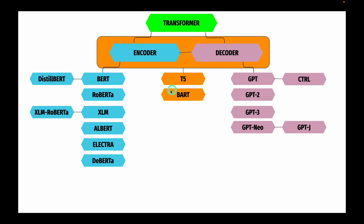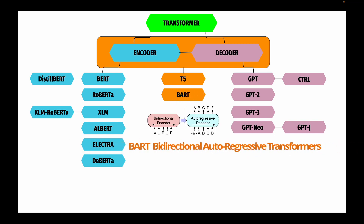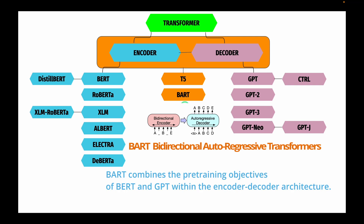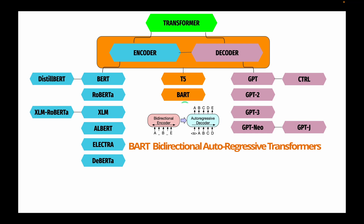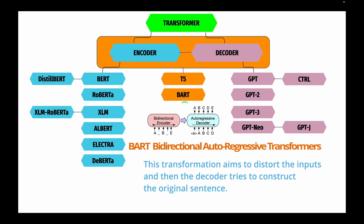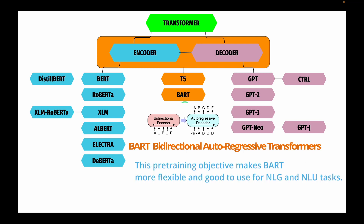The next encoder-decoder architecture is BART, which stands for Bidirectional Autoregressive Transformers. BART combines the pre-training objectives of BERT and GPT with the encoder-decoder architecture. The input sentence undergoes one of the following transformations: simple masking, sentence permutation, token deletion, or document rotation. This distorts the inputs and the decoder tries to reconstruct the original sentence. This pre-training objective makes BART flexible and effective for both NLG and NLU tasks.